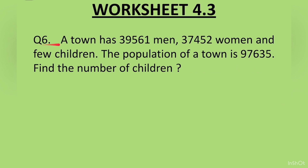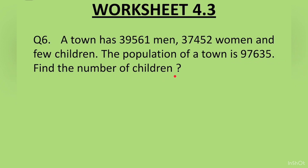Question 6: A town has 39,561 men, 37,452 women and few children. The population of the town is 97,635. Find the number of children.